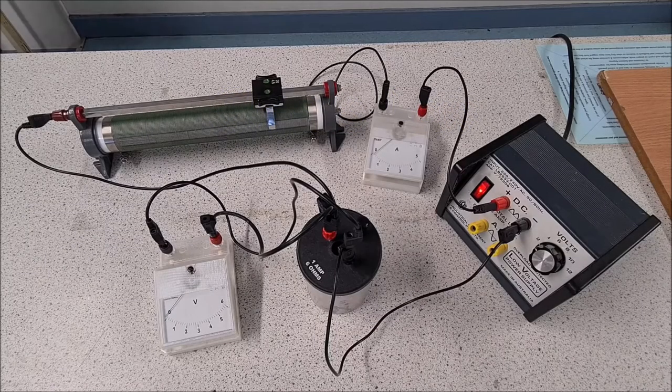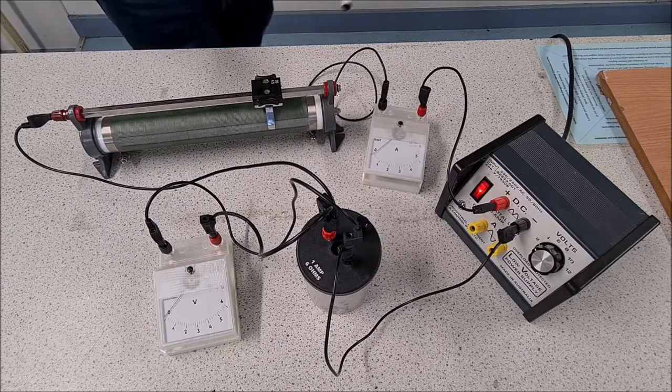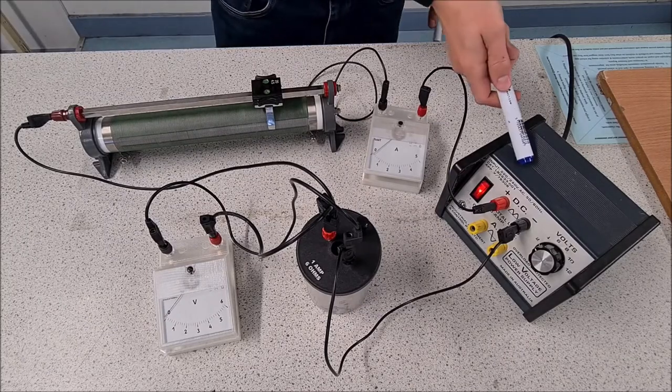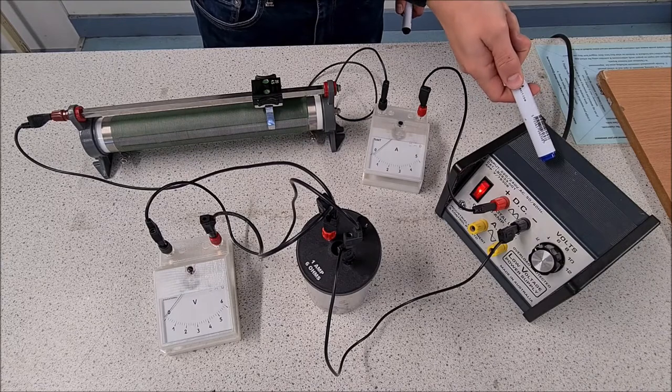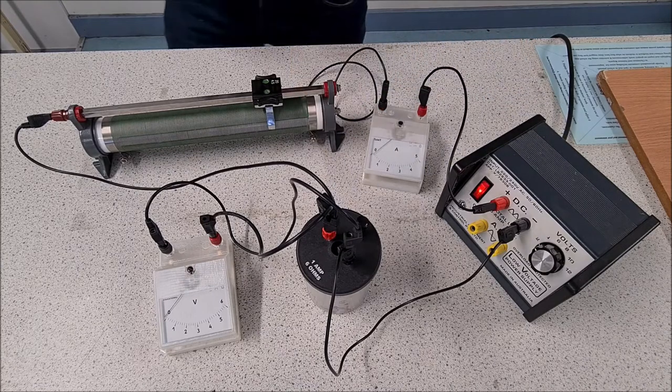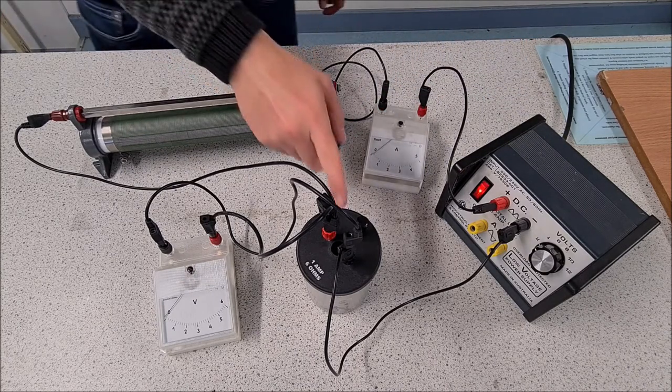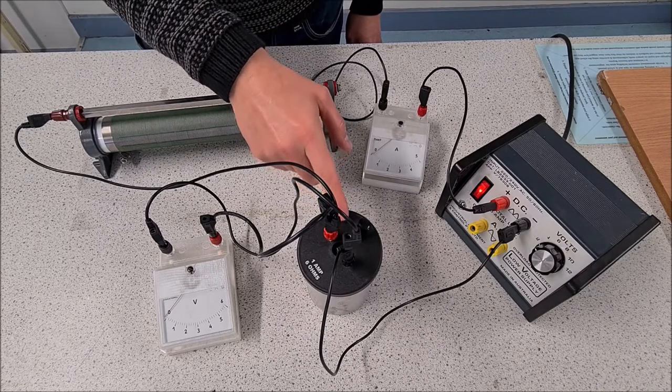Right, so Ohm's Law experiment. What do we need for it? First, we need a power supply. What do we got here? Calorimeter. What's this acting as? A resistor. Okay, so this is the resistor.